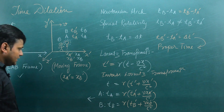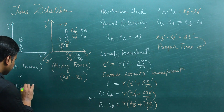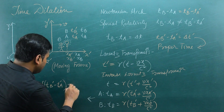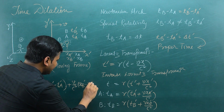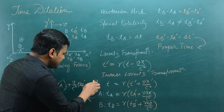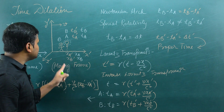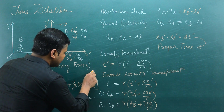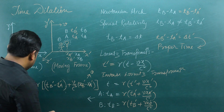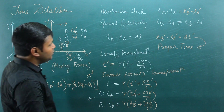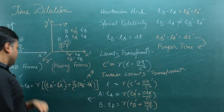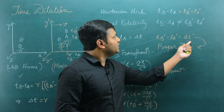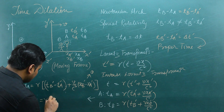Finding the difference between the time periods: TB minus TA equals gamma times (TB' minus TA') plus V upon C squared times (XB' minus XA'). Since the bulb is at rest with respect to the moving frame observer and lights up at the same location both times, XB' minus XA' equals zero. So finally, TB minus TA — the time period as measured by the lab frame observer — equals gamma times (TB' minus TA'), which is the time period as measured by the moving frame observer, which is simply delta T'.